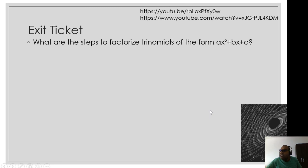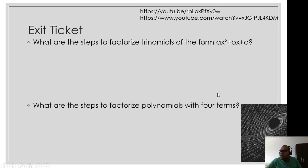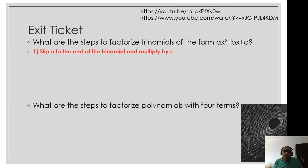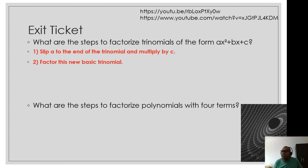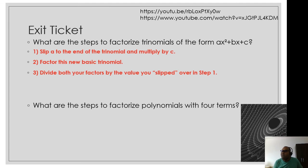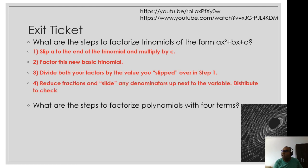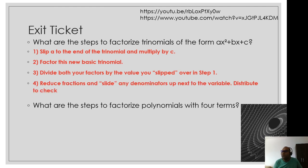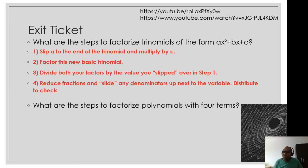Here's your golden ticket — the answers to our learning goals. For factorizing trinomials of the form ax² + bx + c: Step 1 — slip a to the end of the trinomial and multiply by c. Step 2 — factor this new basic trinomial. Step 3 — divide both factors by the value you slipped over in step 1. Step 4 — reduce fractions and slide any denominators up next to the variable, then distribute to check.